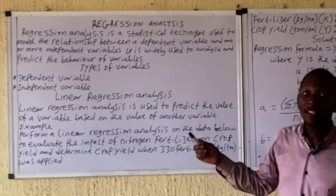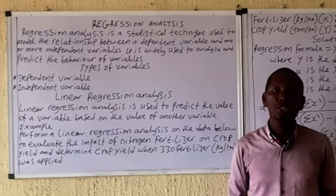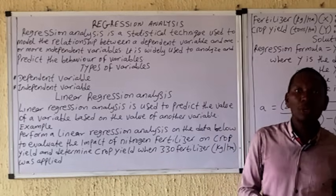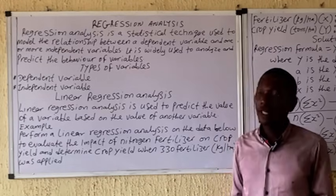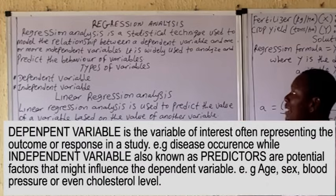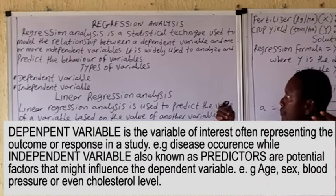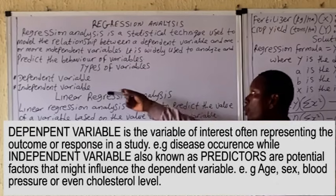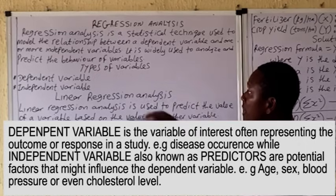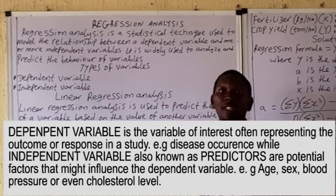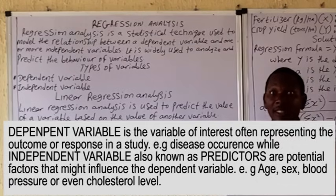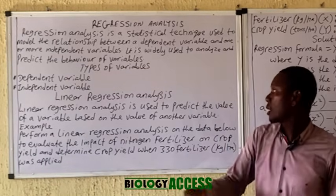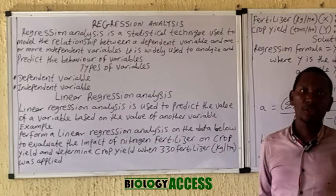Regression analysis is a statistical technique used to model the relationship between variables — usually one dependent variable and one or more independent variables. It is widely used to predict and analyze the behavior of various variables. The dependent variable is the variable of interest, the one we are actually carrying our study on, while the independent variable is used to predict the dependent variable.